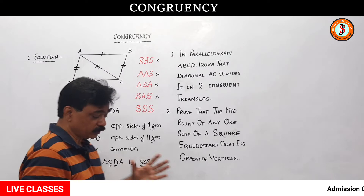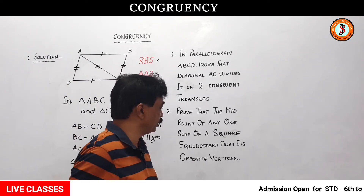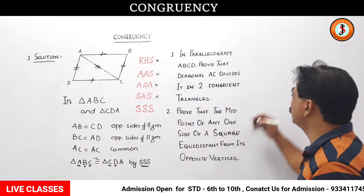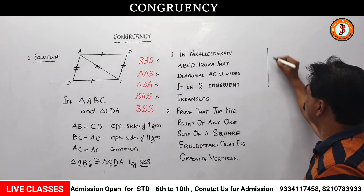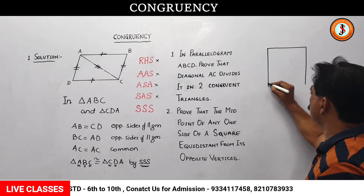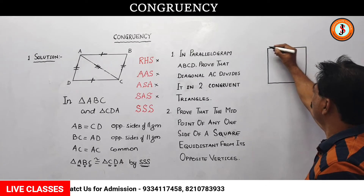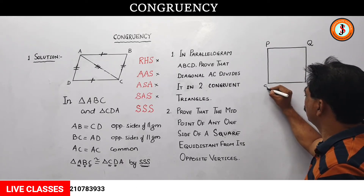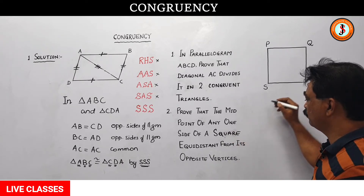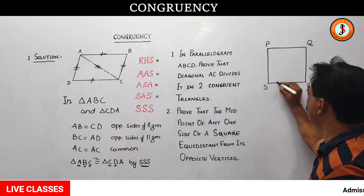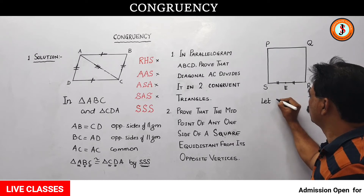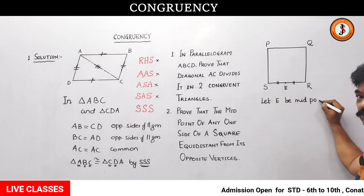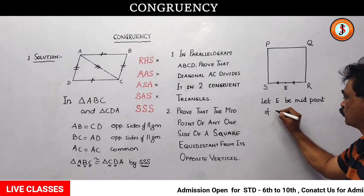Now we go to the second question: prove that the midpoint of any one side of a square is equidistant from its opposite vertices. I will make the square here and name it PQRS. First I will see what is to be done — midpoint of any one side of a square. So I take E as the midpoint of SR: let E be the midpoint of SR.